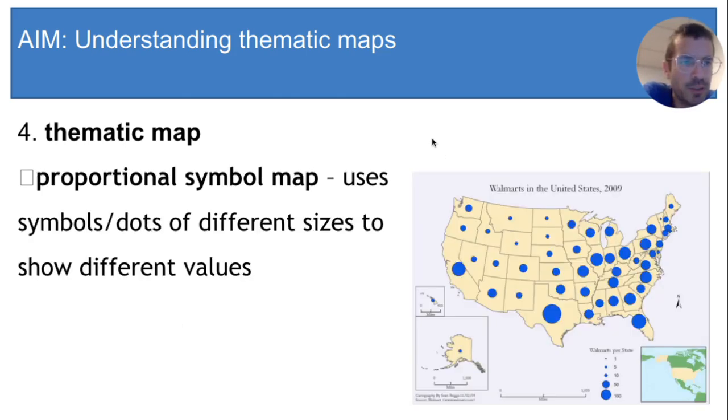The next type of thematic map is called a proportional symbol map. Proportional symbol maps use a certain symbol, sometimes a dot, of different sizes in order to show different values. In this map, larger dots represent more Walmarts. So Texas has a lot of Walmarts, while Alaska has very few. The difference between a proportional symbol map and a dot map is that in a dot map, every dot is the same, whereas in a proportional symbol map, if it uses dots, some dots will be bigger than others.